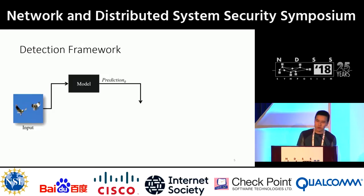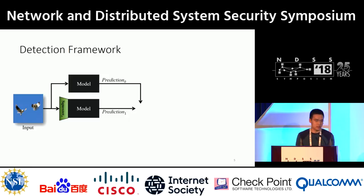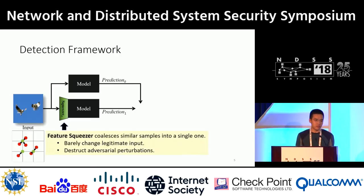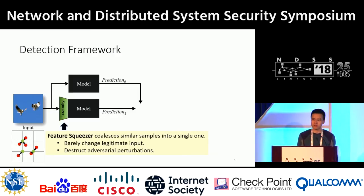Let me introduce the general framework of feature squeezing. Without any defense technique, we would directly take the prediction output of a deep learning model. In the feature squeezing framework, we pre-process the input image with a feature squeezer, which generates a second prediction. A feature squeezer coalesces similar samples into a single one and barely changes the image semantics. So for a legitimate image input, the two predictions should be the same. On the other hand, adversarial perturbations might be distorted by the feature squeezing operation, so the two predictions of an adversarial image could be very different.